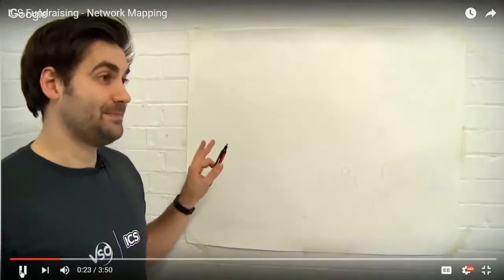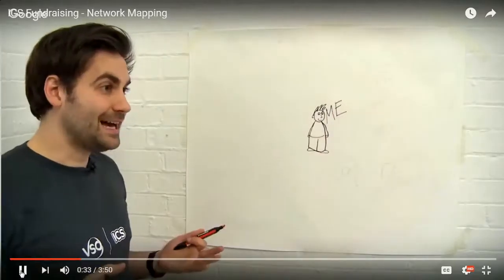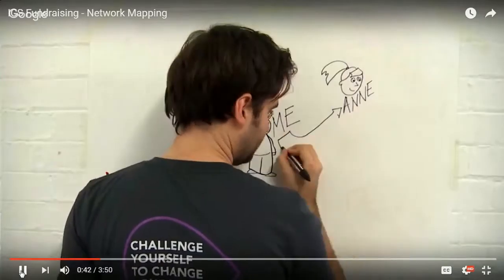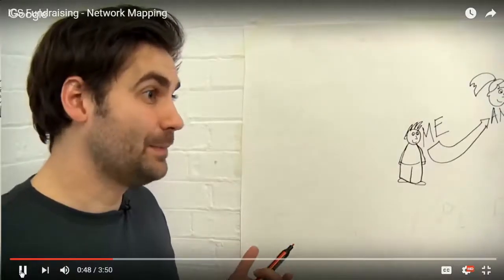Hi and welcome to this ICS fundraising tips video. My name's Isaac and I'm going to take you through an activity today which I find really useful when planning my fundraising. It's designed to get you thinking about all those different people who might be able to help you. It's called network mapping and it's really simple. You start with a big piece of paper, write your own name in the middle, think of somebody else you know, pop their name somewhere else on the paper, and connect those two names together.